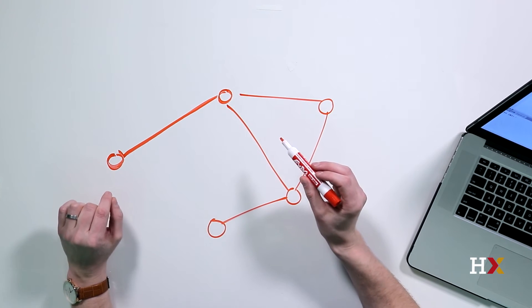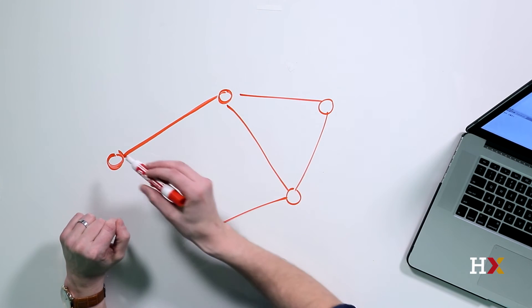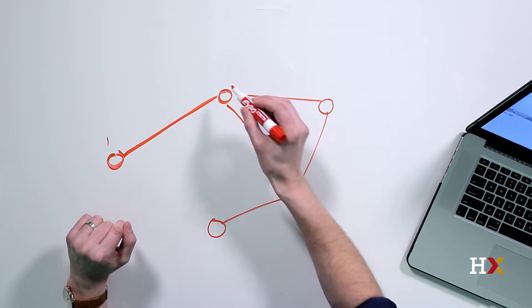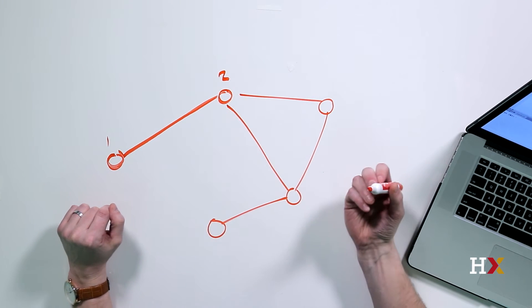Two connected vertices are said to be neighbors. So this vertex, vertex number one, is the neighbor of vertex two, and vice versa.